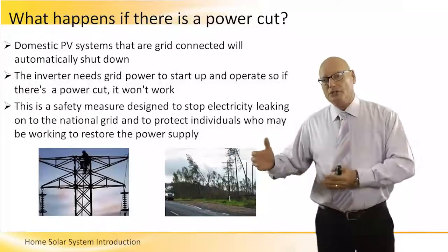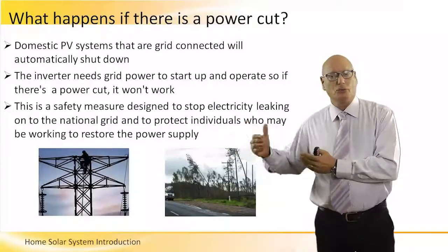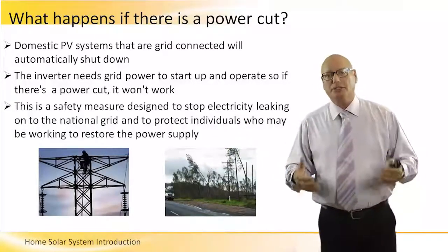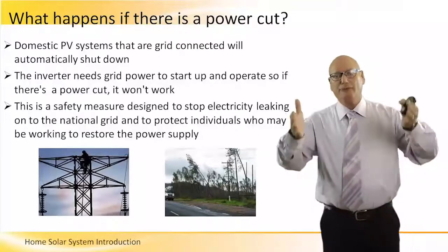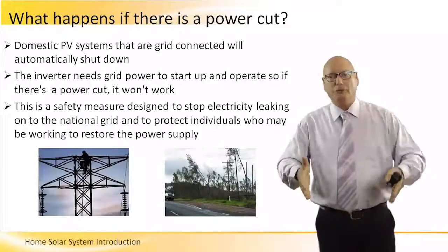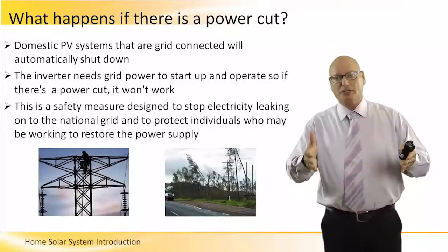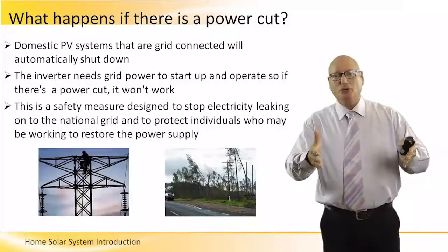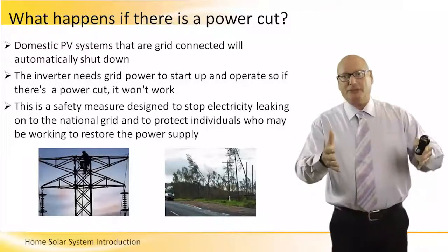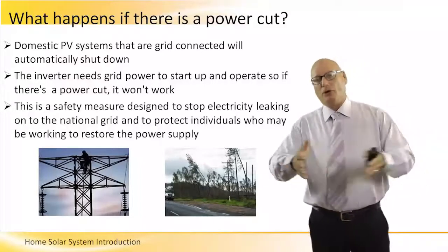So if there is a power cut, we know there is no electricity on the grid — on the lines, on the wires — but the system continues to generate electricity. From a safety standpoint, we have to automatically cut, at zero time, the influence of the PV system on the grid.